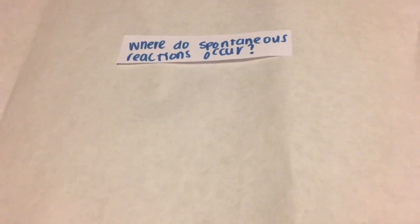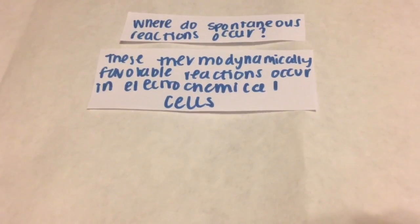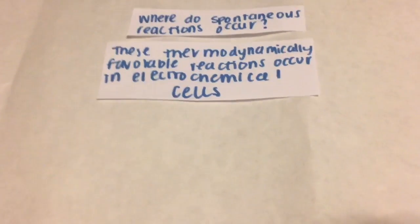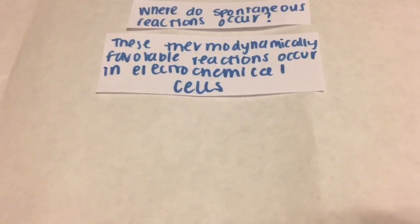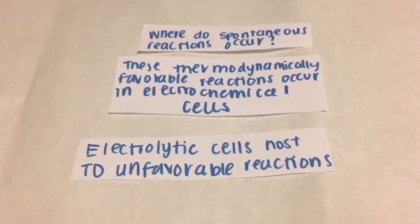There are two types of cells: electrolytic and galvanic. Thermodynamically favorable reactions occur in electrochemical or galvanic cells. This means that the reaction is spontaneous. Thermodynamically unfavorable reactions occur in electrolytic cells.